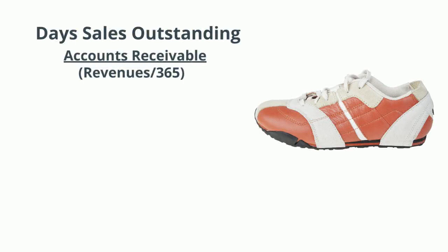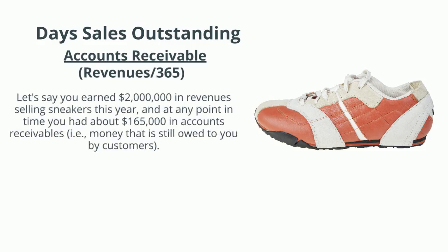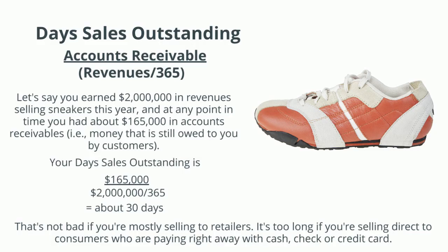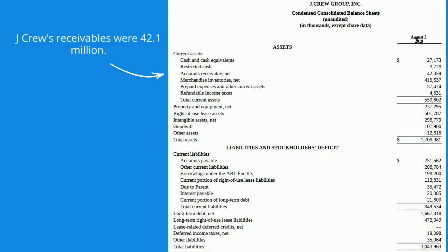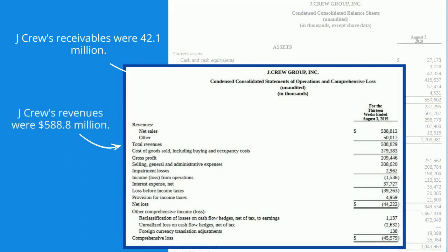Now we'll do day sales outstanding — how long it takes to collect payment from customers. We calculate it by dividing accounts receivable by average sales per day. If you earned $2 million in revenues and had $165,000 in accounts receivable at any point, dividing accounts receivable by $2 million over 365 days gives about 30 days. J.Crew's receivables were $42.1 million and revenues were $588.8 million, so their day sales outstanding was about 26 days — too long for a clothing retailer selling direct to consumers, where we'd expect 3 to 10 days.